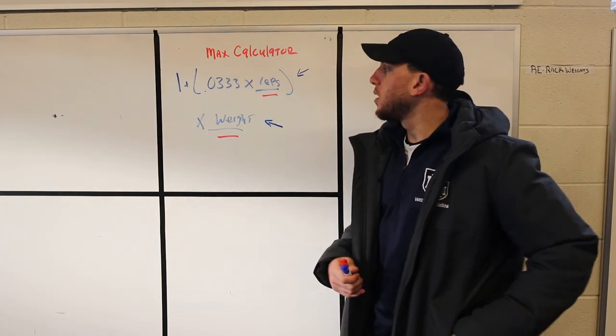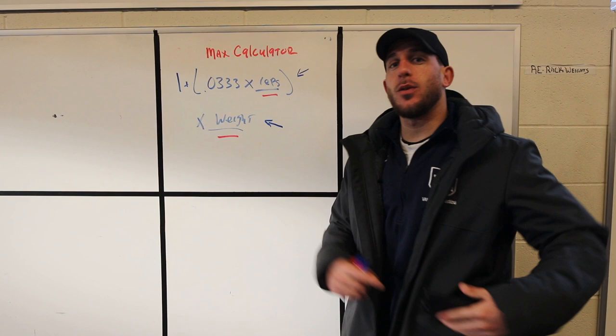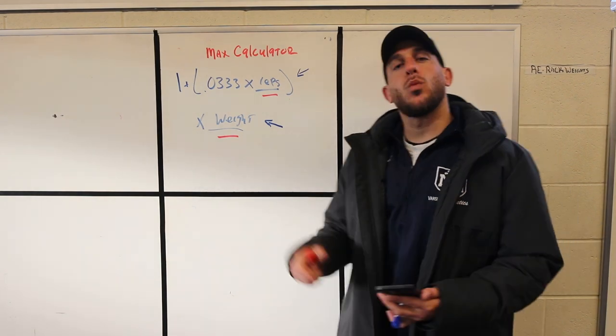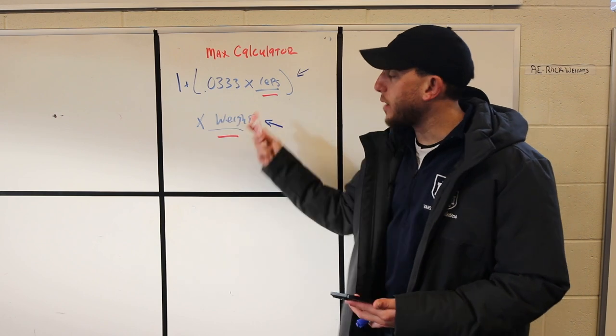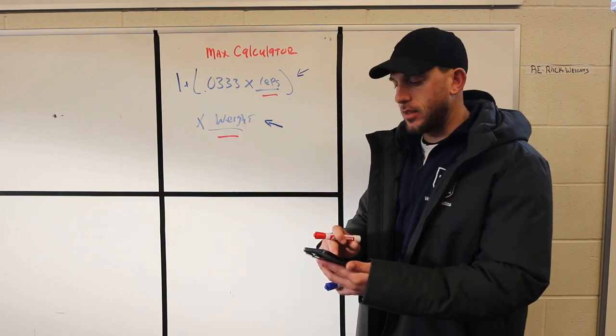One more example: if you're on bench press and you hit 135 for 8 reps, you go back to the calculations and start with the parentheses. You did 8 reps times 0.0333, and then you add 1.